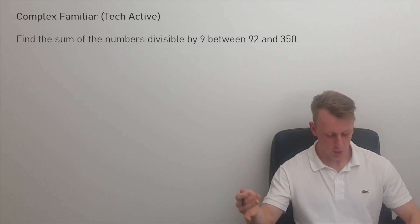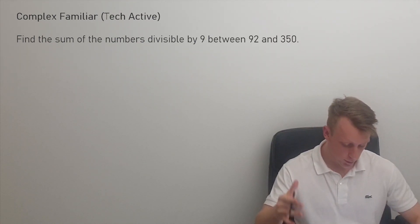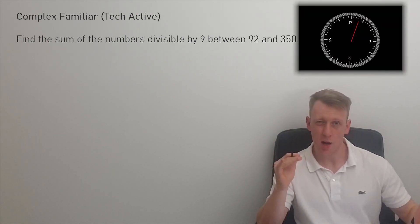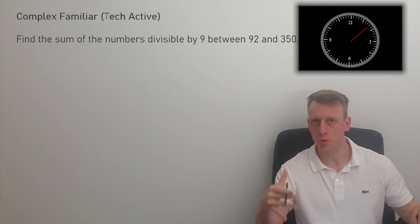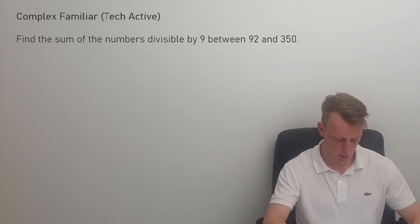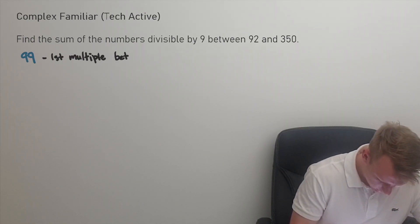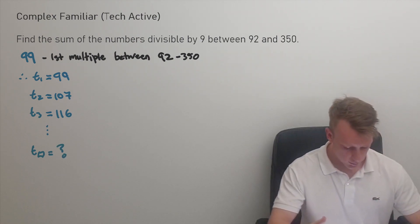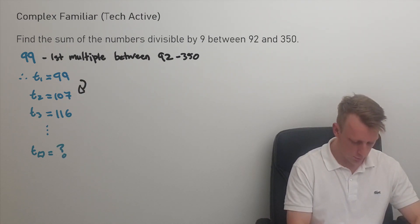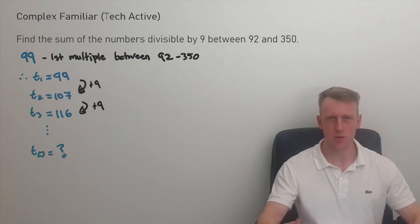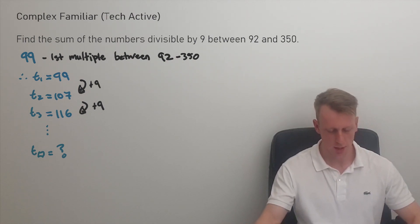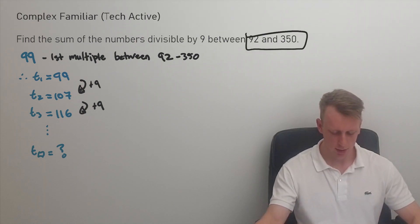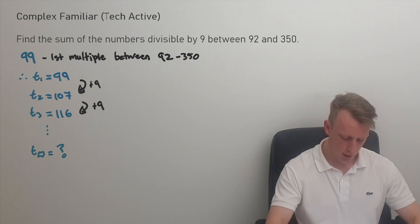This is a tech active question — complex familiar. It's not immediately obvious that you'd use arithmetic sequencing here. It should take roughly eight to ten minutes depending on your comfort with sequencing questions. We identify a common difference of nine, because when dealing with multiples of nine, you simply add nine each time.